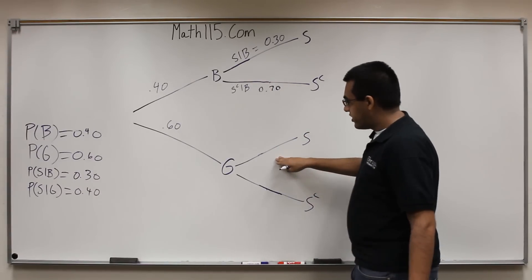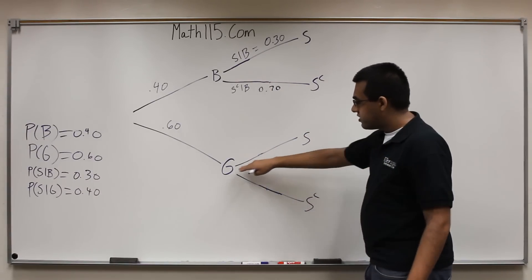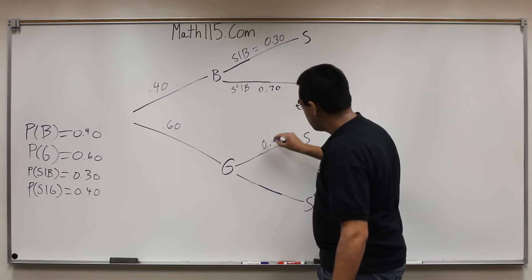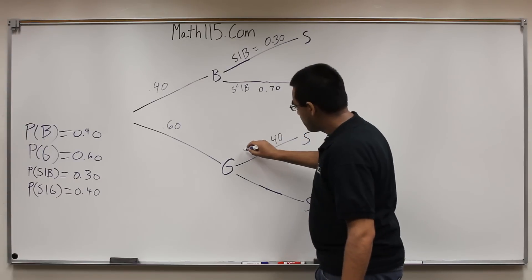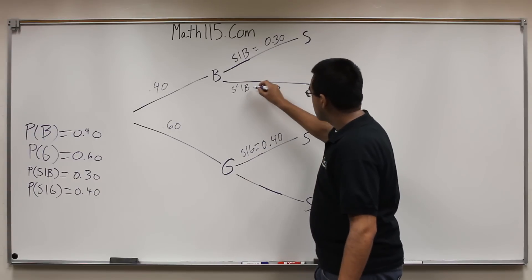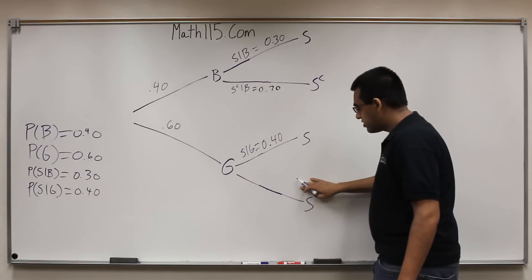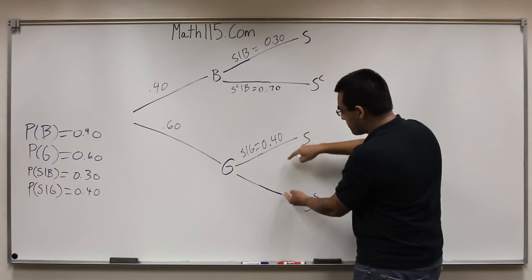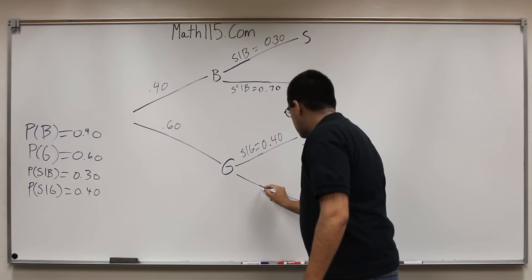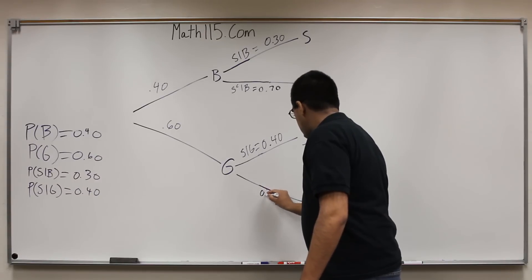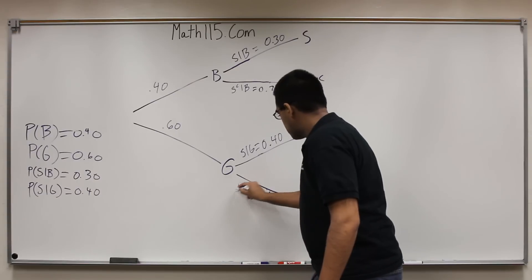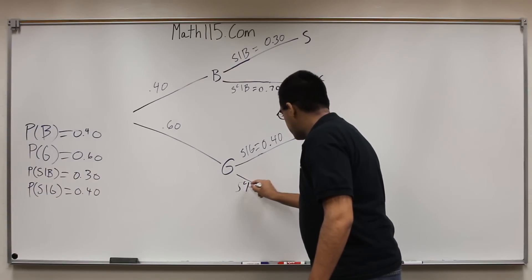Over here, this should be S given G — so that's this number right here, we can put in 40%, and that is S given G. And then down here should be S complement given G, and again these two numbers need to add to one, so we know that this number will be 60%. That is S complement given G.